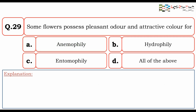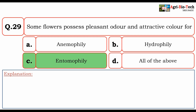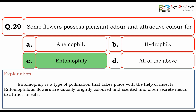Some flowers possess pleasant odor and attractive color for: A. anemophily, B. hydrophily, C. entomophily, D. all of the above. The correct option is C. entomophily. Entomophily is a type of pollination that takes place with the help of insects. Entomophilous flowers are usually brightly colored and scented and often secrete nectar to attract insects.